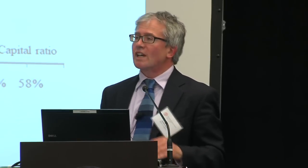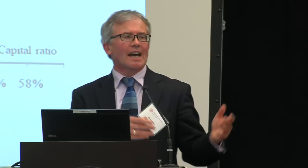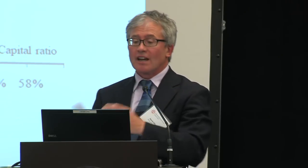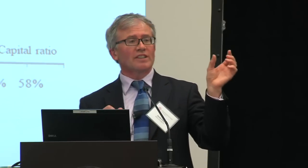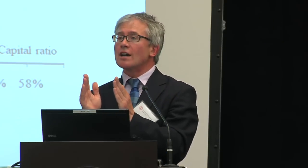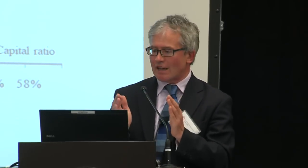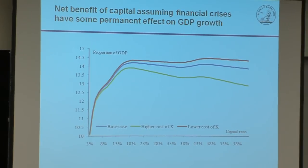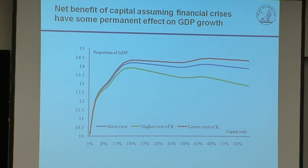We can now put the bits of this calculation together. We have a way of working out how much funding costs go up if you ask for more equity, what that does to investment, the capital stock, and GDP — that's the cost side. On the benefit side, more equity capital makes the probability of bank insolvencies slightly lower, which has a benefit because banking insolvencies are very damaging. The question is: what level of capital maximizes benefits over costs? On the horizontal axis we measure different levels of the capital ratio relative to risk-weighted assets, and on the vertical axis a measure of net benefits.